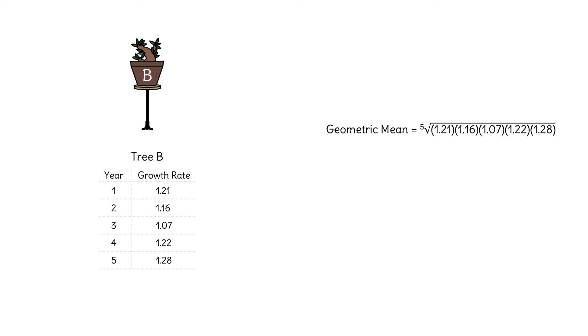First, we multiply the five growth rates, then we take the fifth root of 2.35 to find the equivalent steady growth rate. Her second tree is well above the curve at 19%.